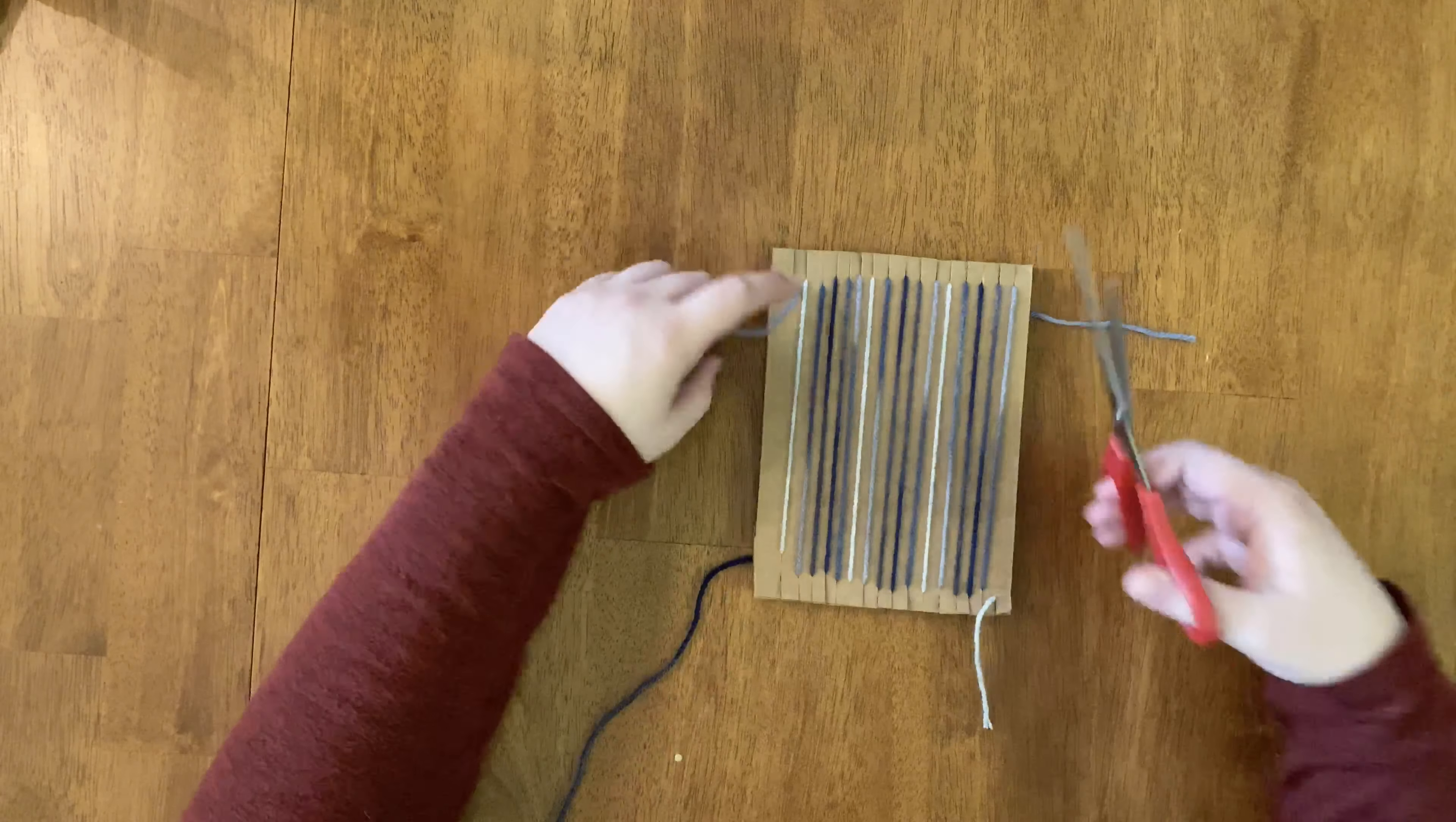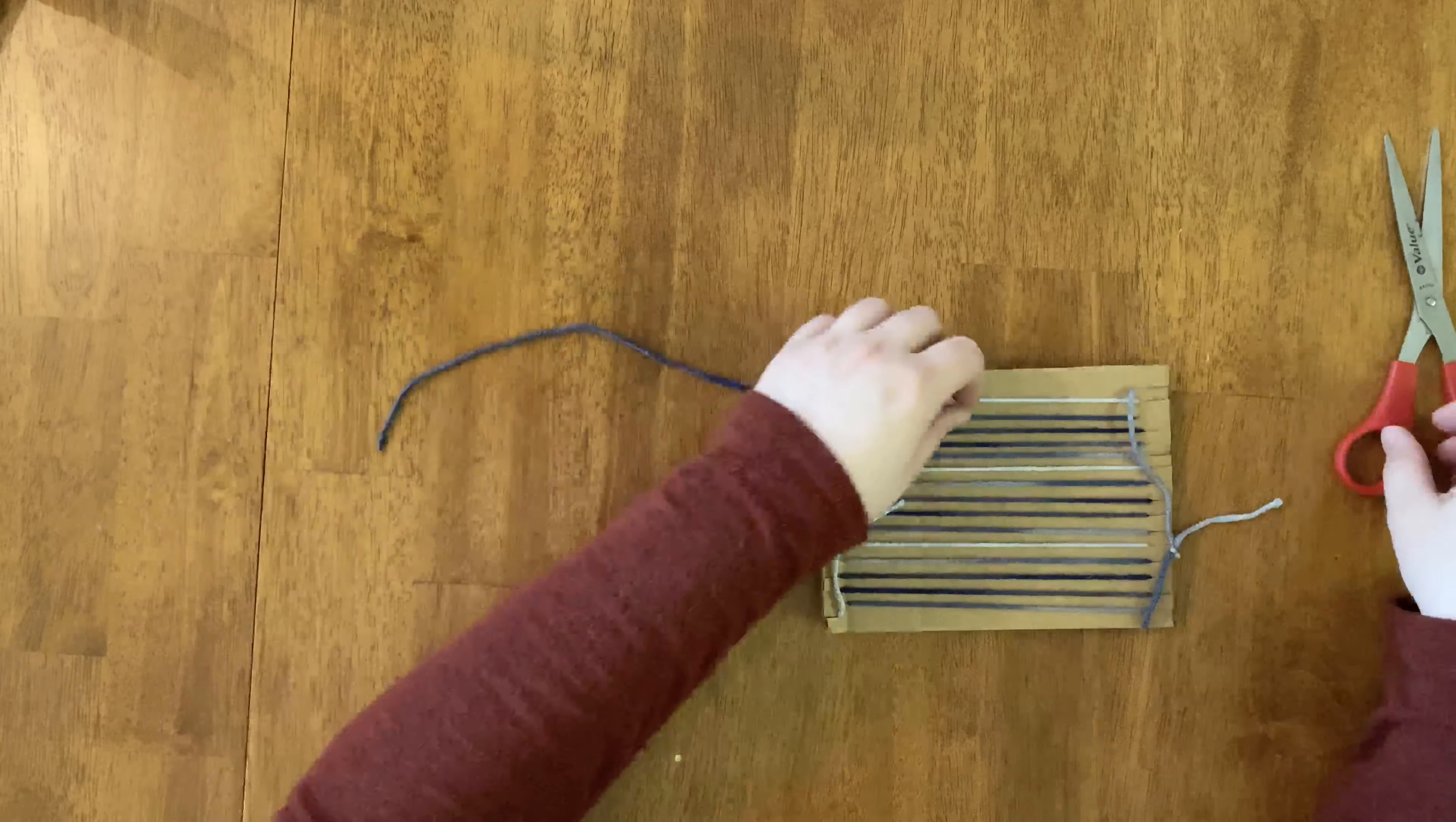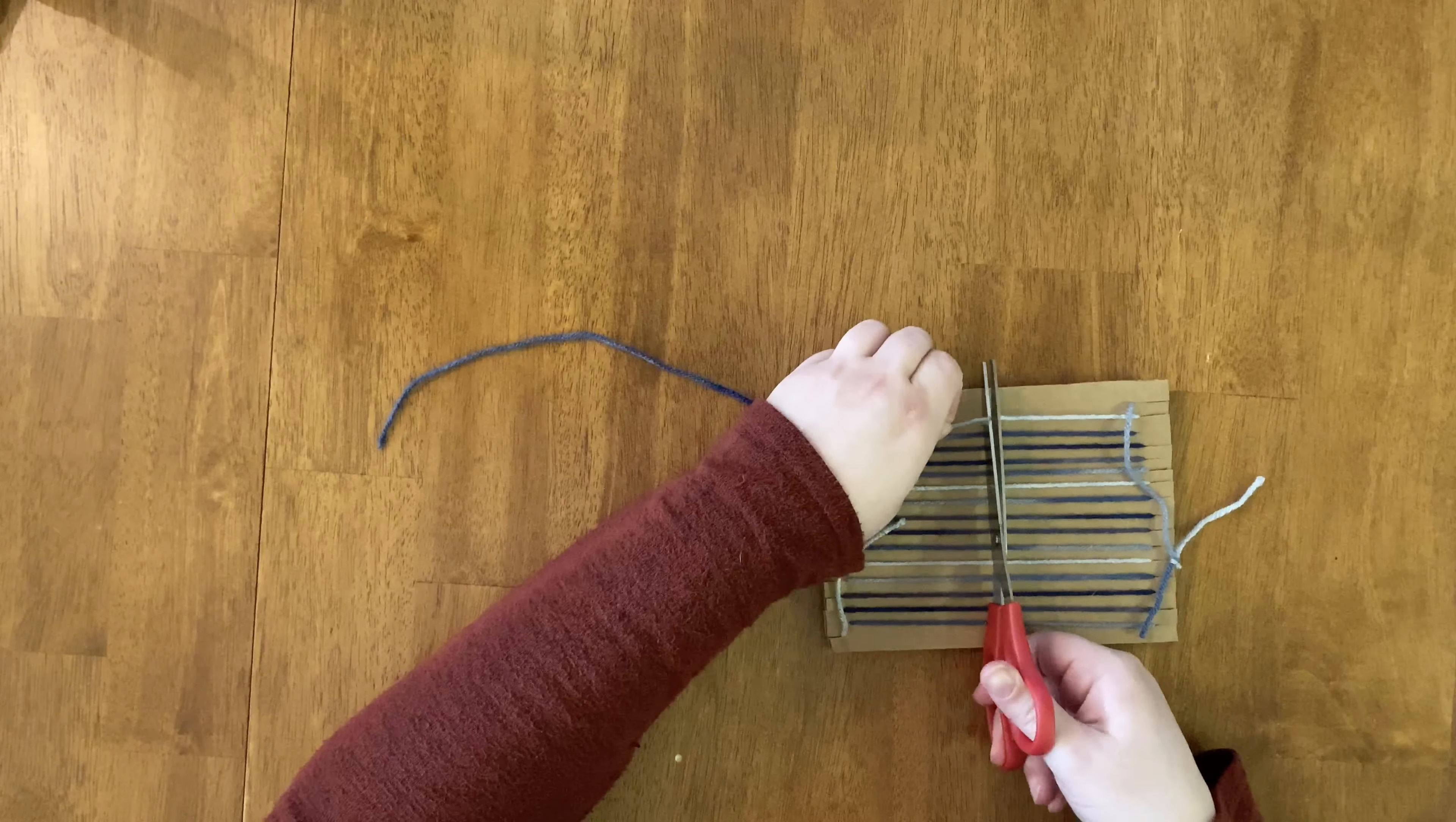Now I'm going to tie the end of my weft strings to my warp strings. To do that I figured out which warp string was closest to the end of my weft strings and then I cut that one on the back. This will be one of the warp strings on the end of your loom.